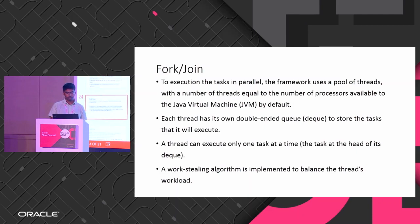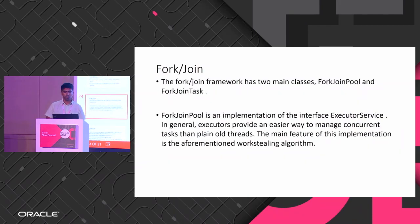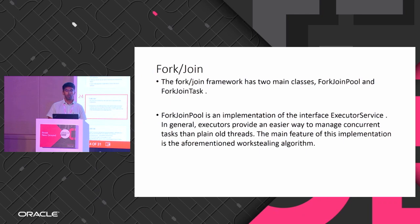The Fork/Join framework has two main classes: ForkJoinPool and ForkJoinTask. ForkJoinPool is an implementation of the ExecutorService interface. The key difference is it has the work-stealing algorithm implemented, which differentiates it from a regular executor service.